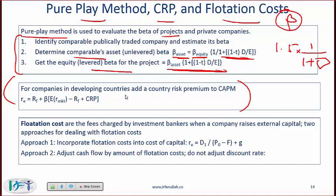If you are a US-based investor investing in an emerging market such as Brazil, there is a country risk associated. That risk is captured using the country risk premium. The cost of equity of investing in a Brazilian company is the risk-free rate plus beta times a market risk premium that now includes an additional country risk premium. The probability of being tested on exactly how to calculate the country risk premium is relatively low, so don't spend too much time on those details.